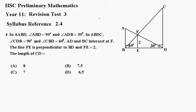In triangle BDC, angle CDB is 90 and angle CBD equals 60. AD and BC intersect at F. The line FE is perpendicular to BD and FE is 2 units.